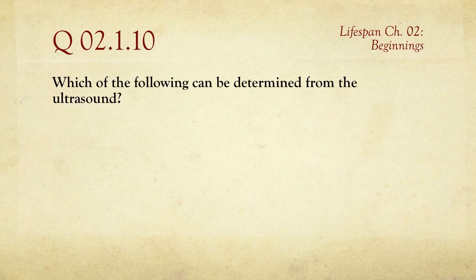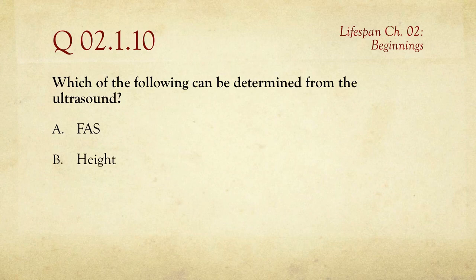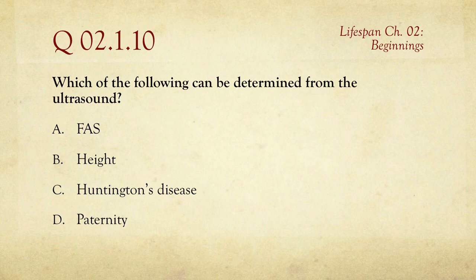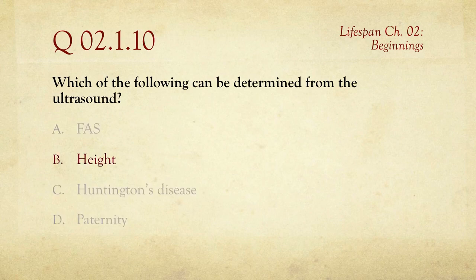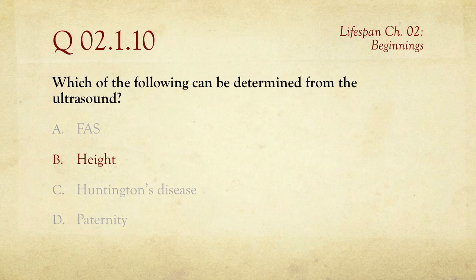The last question in this first quiz: which of the following can be determined from an ultrasound — FAS (fetal alcohol syndrome), height, Huntington's disease, or paternity? The answer is B, height, because an ultrasound is essentially just looking — you can measure the baby. Fetal alcohol syndrome is tricky and often identified after birth; Huntington's disease requires genetic testing; and paternity also requires a genetic test. Height is what you can most easily determine from an ultrasound.